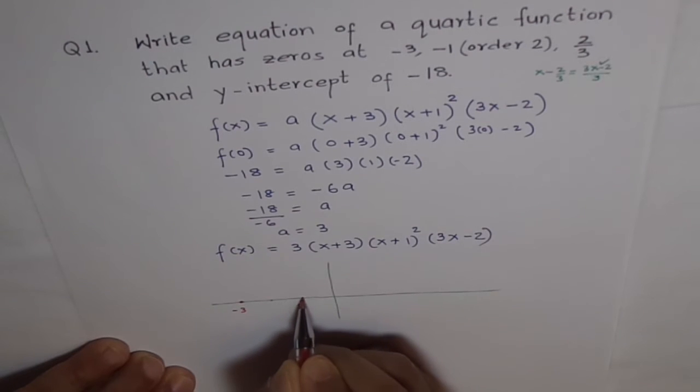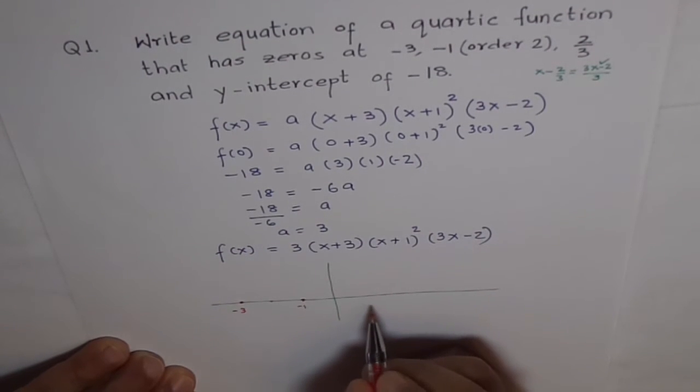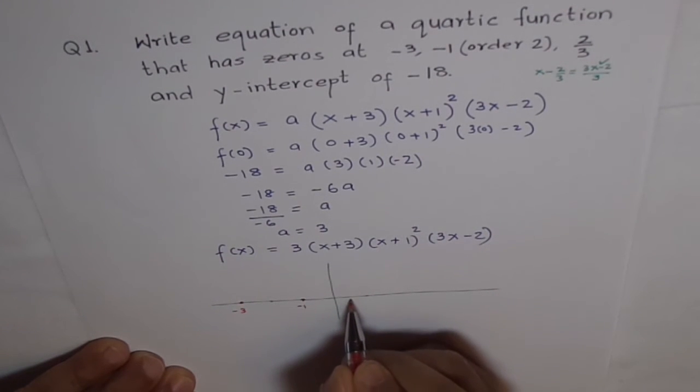These are my zeros, okay? And at 2 over 3. 2 over 3 is less than 1. So, let's just put it like this. 2 over 3. So, this is my 2 over 3.